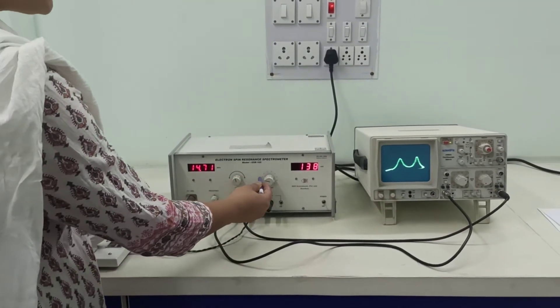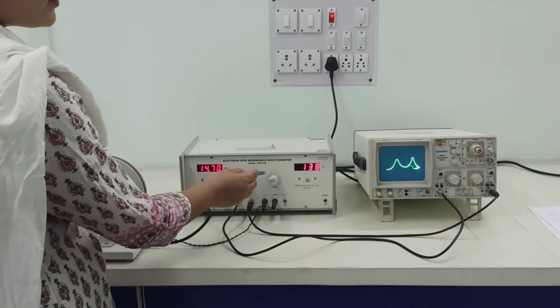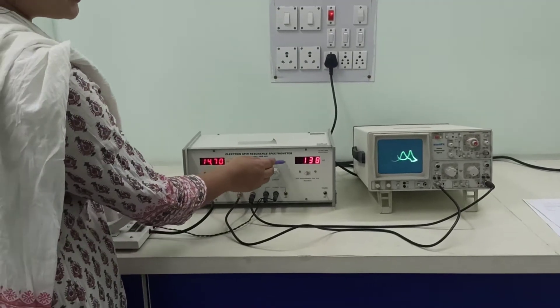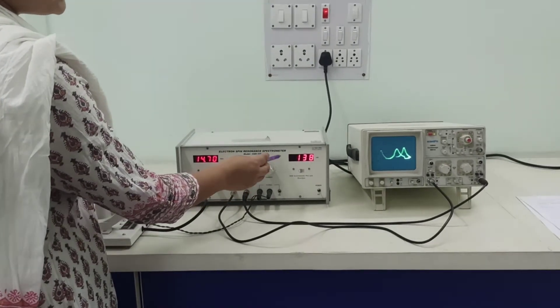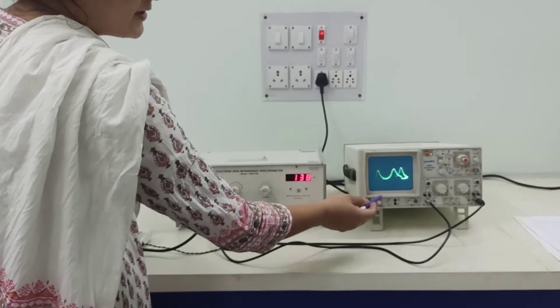In our experiment, we will change the current values for a particular frequency. For a particular value of frequency, a single value of frequency, we will keep changing the currents. Once we keep changing the currents, we will observe different peaks of different distances.